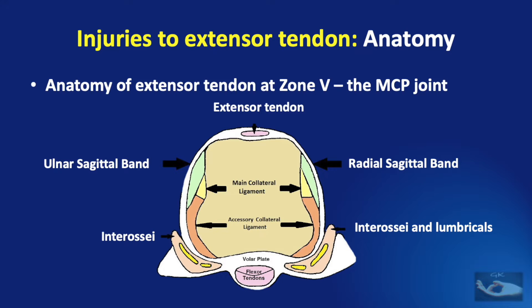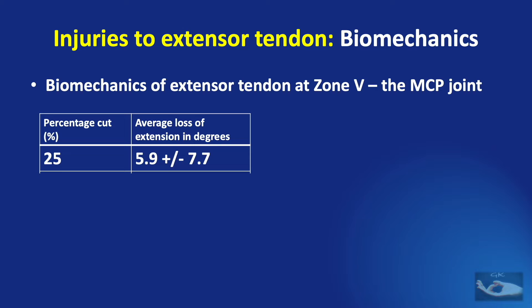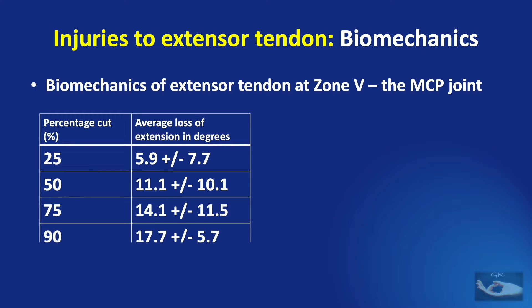On the volar side, we have the volar plate and even volar to that are the flexor tendons and the fibrous flexor sheath. Sometimes we come across a patient with a partial cut of the extensor tendon. Is it necessary to repair these partial injuries? Considering the biomechanics, even with a 25% cut of the extensor tendon, there is an average loss of about 6 degrees plus or minus 7 degrees — which comes to almost 15 degrees extension lag. And it goes progressively up till a total cut, when the extension lag is around 35 degrees.